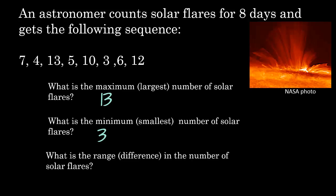What is the range or difference in the number of solar flares? We're going to take the largest number, 13, minus the smallest number, 3, and it turns out that our range is 10.